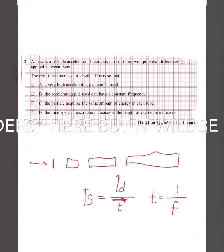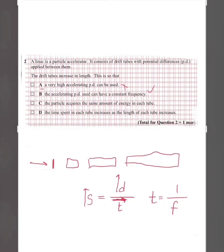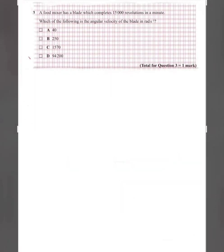Evaluating the answer options: A — a very high accelerating PD can be used — no, the alternating PD used can have a constant frequency. C — the particle acquires the same amount of energy each time — not relevant to the question. D — the time spent in each tube increases as the length increases — no, the length of the tube increases but the time spent in each drift tube remains constant. So the answer is B.